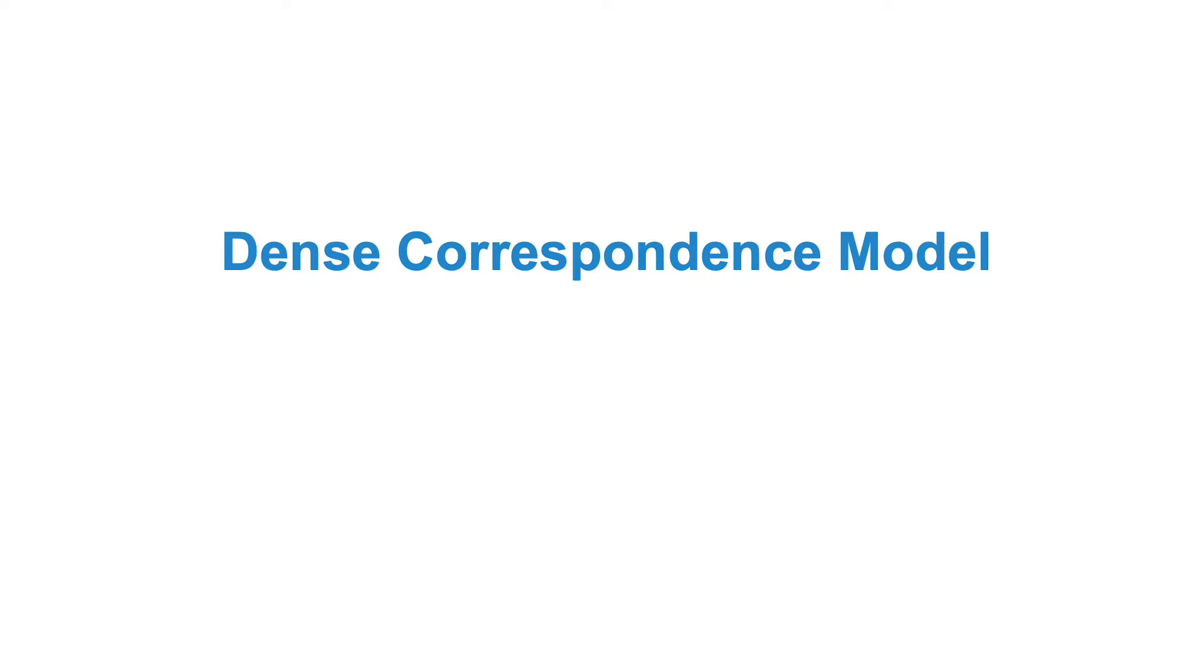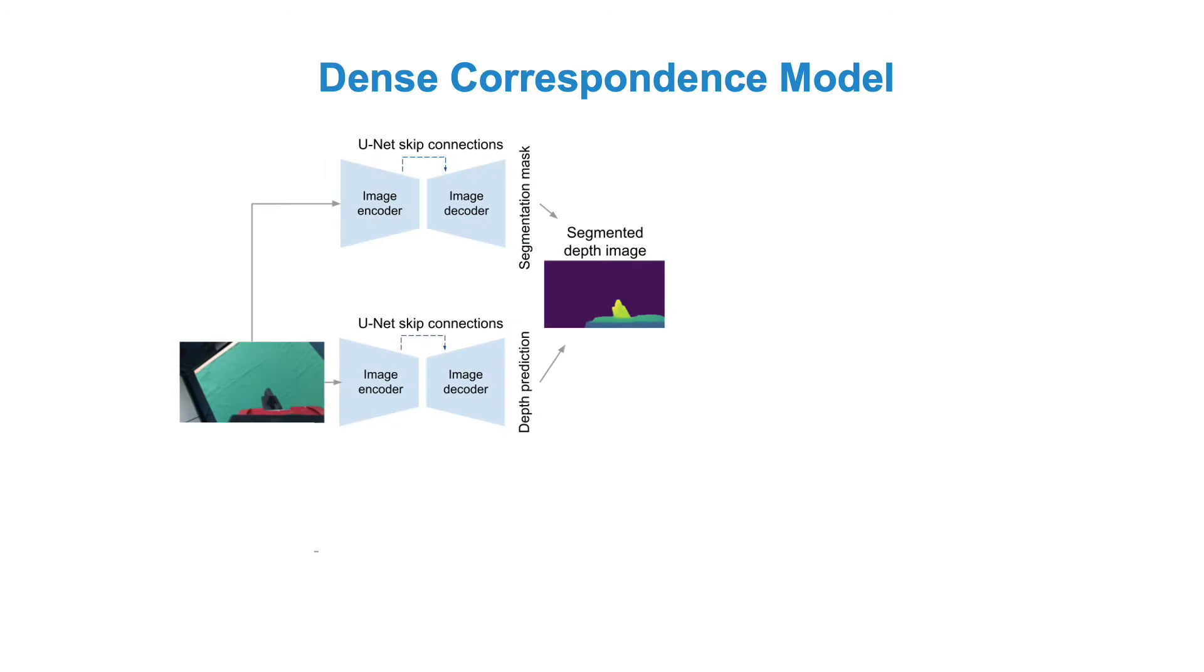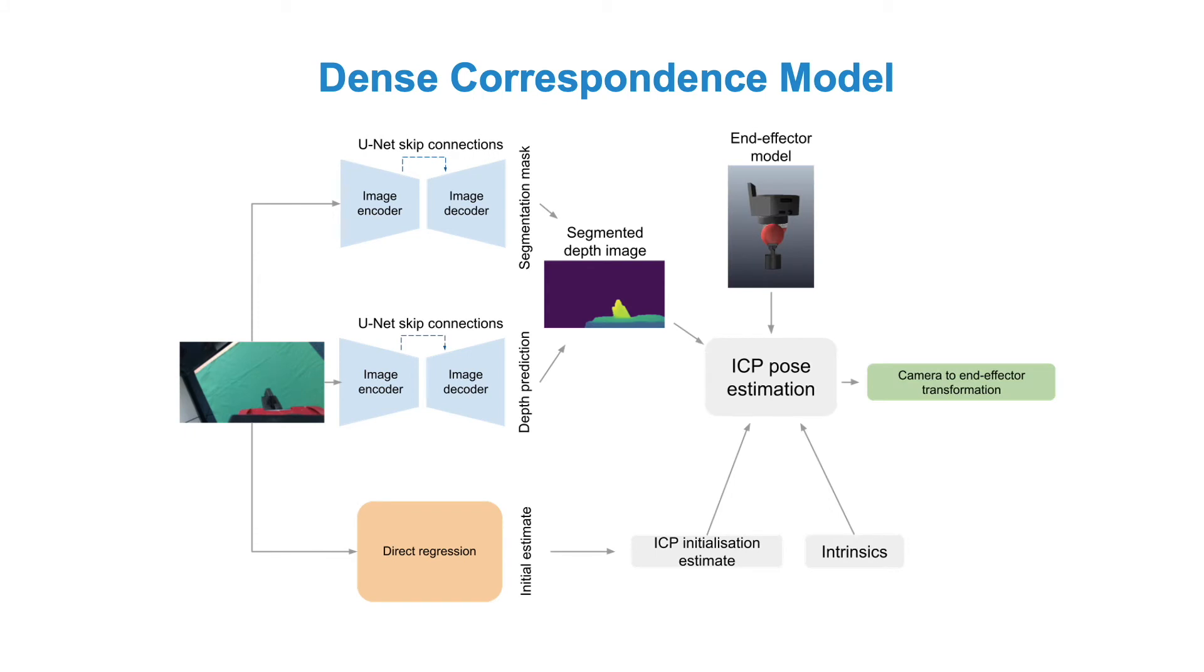Finally, a dense correspondence model that relies on ICP to predict the final camera calibration. From an input image we regress a segmentation mask of the gripper and a depth map prediction which we combine to a segmented depth prediction output. Then, we use a direct regression model to obtain an initial estimate of the extrinsics. Finally, these outputs are combined along with a model of the gripper and the camera intrinsics matrix to solve for the camera pose with the ICP algorithm.